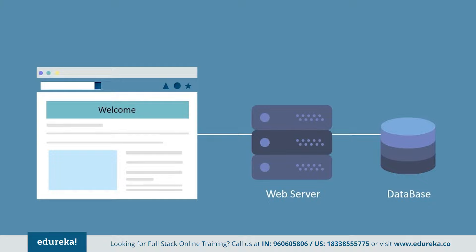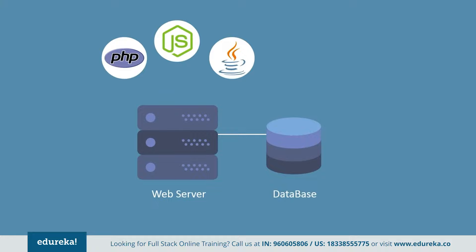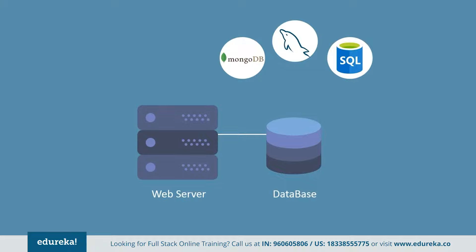The role of a fullstack developer is to create an application that fills a web page with required resources by pulling data from the database. This application is programmed using server-side languages like Java, Python, PHP, and Node.js, and the database is programmed using languages such as MySQL, MongoDB, and SQL. The back-end of a web page is used to serve the required resources to a user. A fullstack developer has to create both the front-end and the back-end.